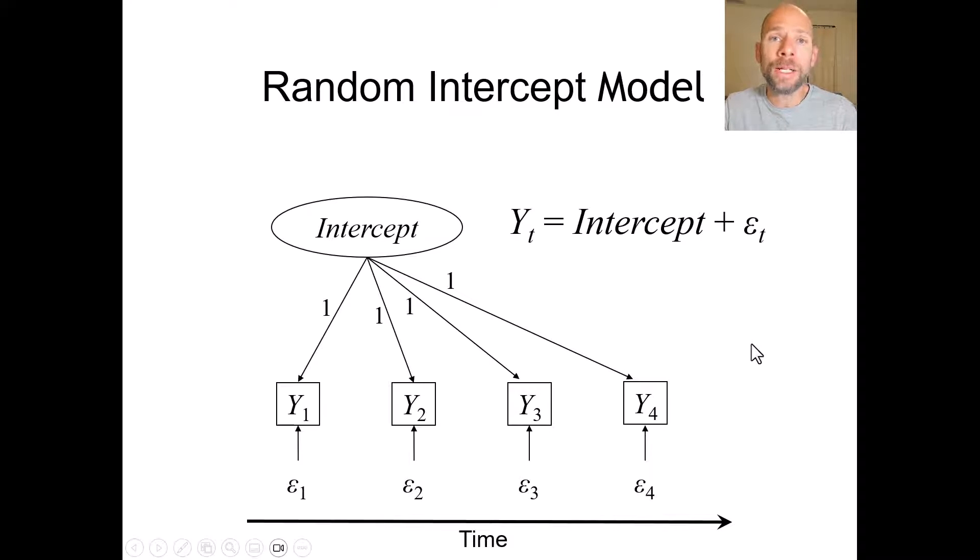In summary, this model has a very simple measurement equation that holds for all time points. So yt indicates the repeated measures variable, t stands for the time point. And for each yt we have the same equation where yt is a function of the random intercept factor plus a time-specific measurement error variable epsilon t.